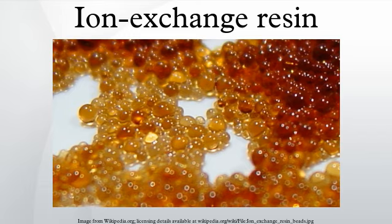An ion exchange resin or ion exchange polymer is an insoluble matrix, normally in the form of small beads, usually white or yellowish, fabricated from an organic polymer substrate. The beads are typically porous, providing a high surface area. The trapping of ions occurs with the accompanying releasing of other ions; thus the process is called ion exchange.